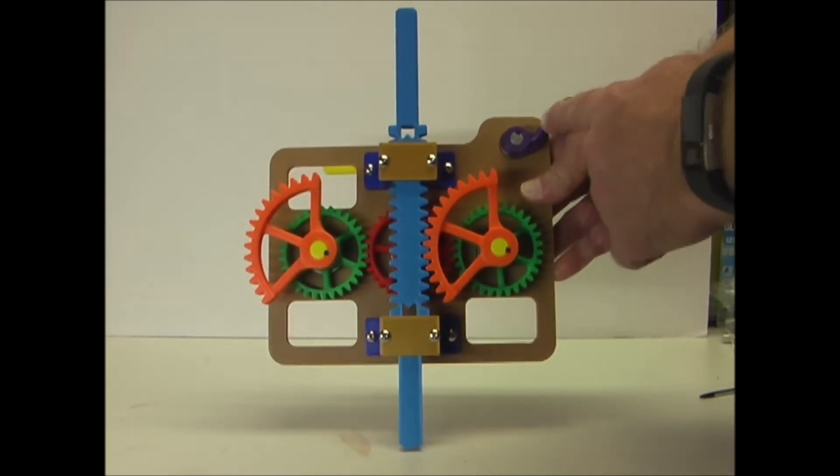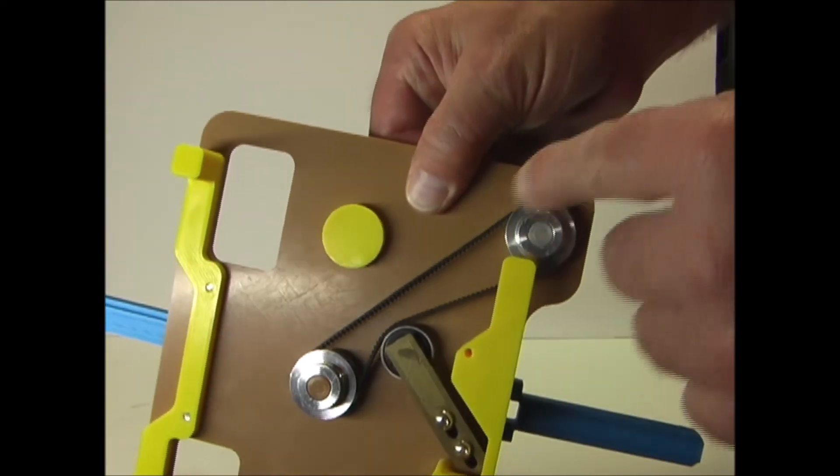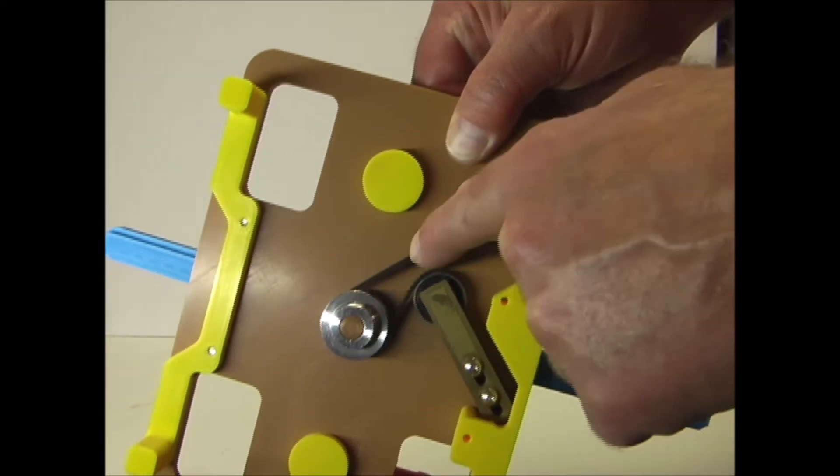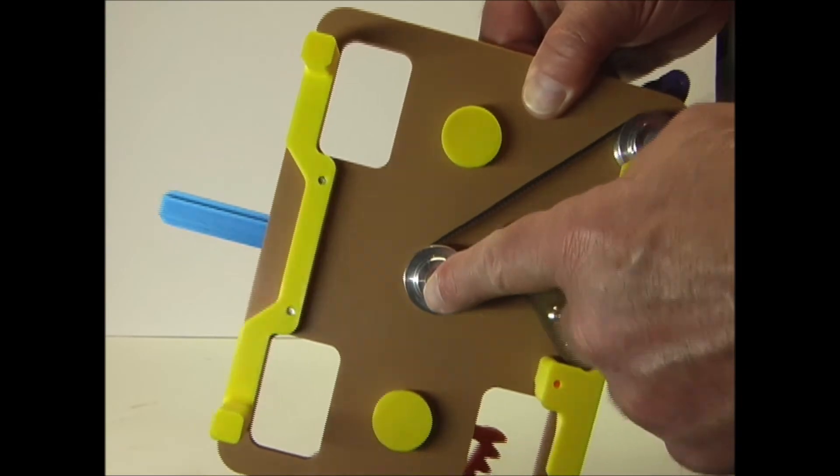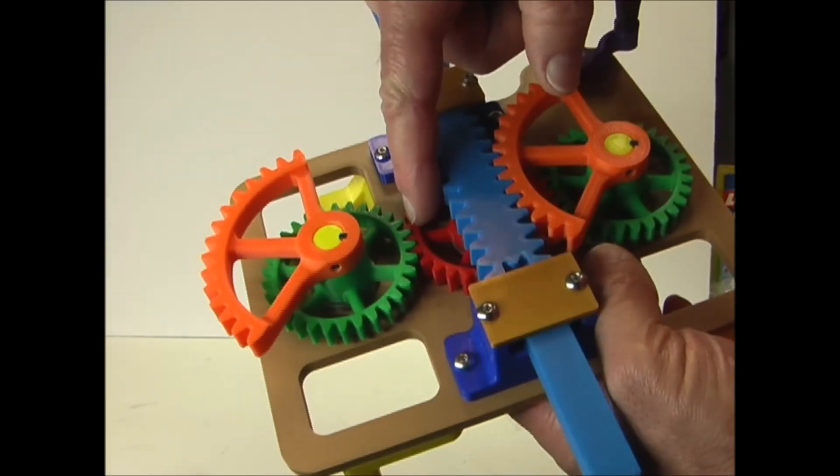This one has this crank on the top, and that is connected to this pulley on the bottom, which turns this belt connected to this pulley, and that pulley turns this red gear in the middle.